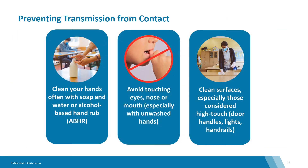While much less common, transmission can also occur through contact with surfaces touched or sneezed on by someone ill with COVID-19. Cleaning your hands frequently with soap and water or alcohol-based hand rub plays an important role in reducing infection risk. You can also reduce your risk by not touching your eyes, nose, and mouth, as this is how the virus enters your system. Keeping surfaces clean, especially high-touch surfaces like door handles, also helps reduce risk.